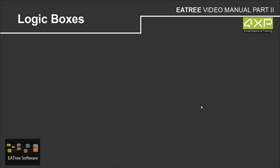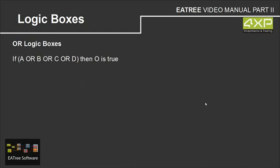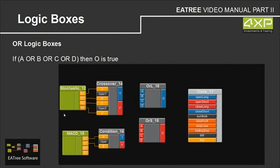Quite similar, but not exactly the same, is the OR logic box. This is: if A or B or C or D, then O is true — not A AND B AND C, but A OR B OR C. Here's the same example with the same connections. But the difference is we only need one of them. If the stochastic is positive, it opens a long position, or if the MACD is positive, it opens a long position — it does not require both of them. We only need one of them to be positive or negative to open a short position.